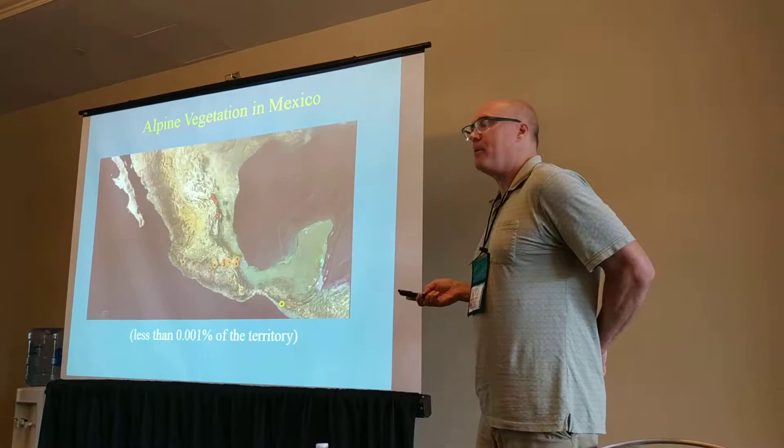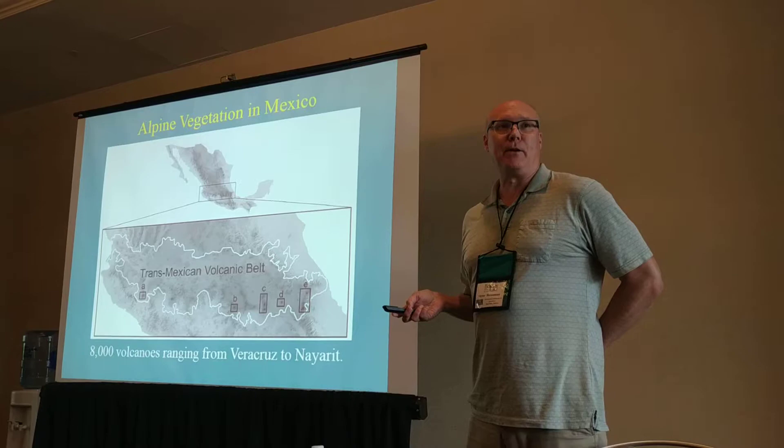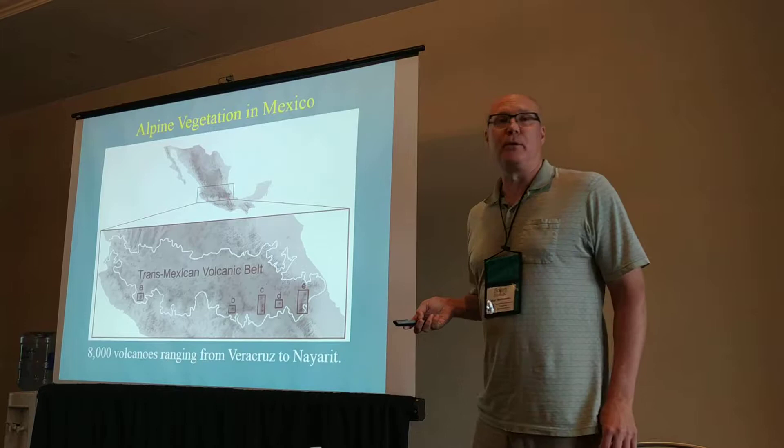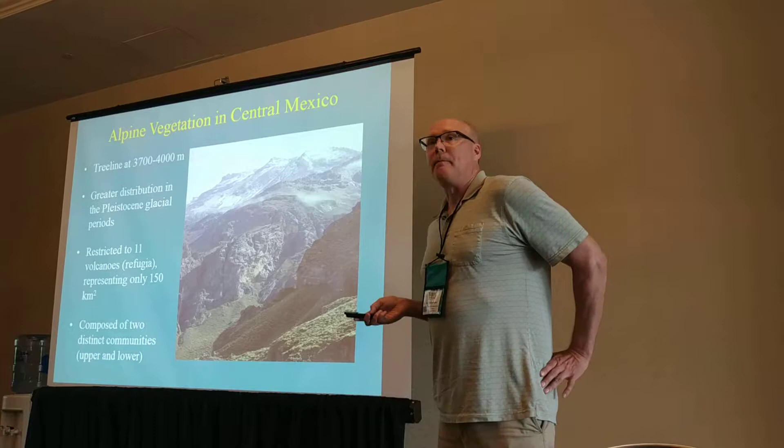What we're going to be talking about today is the alpine vegetation of central Mexico, which is restricted to the trans-Mexican volcanic belt. This is an active volcanic region that essentially stretches across the country, and it's composed of thousands of volcanic peaks, some of which are still active.